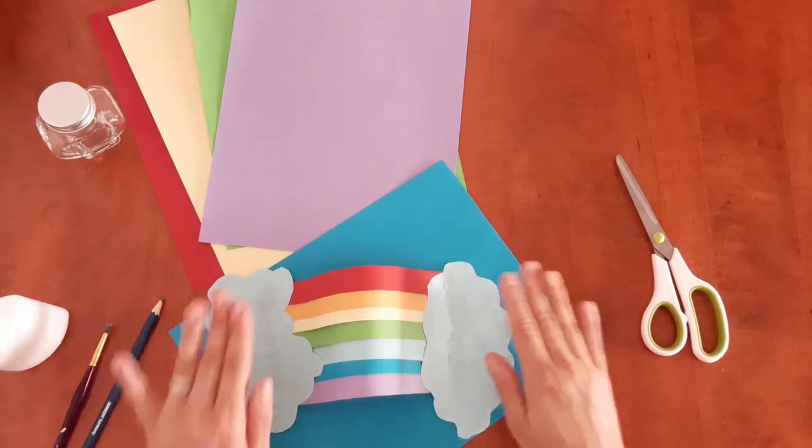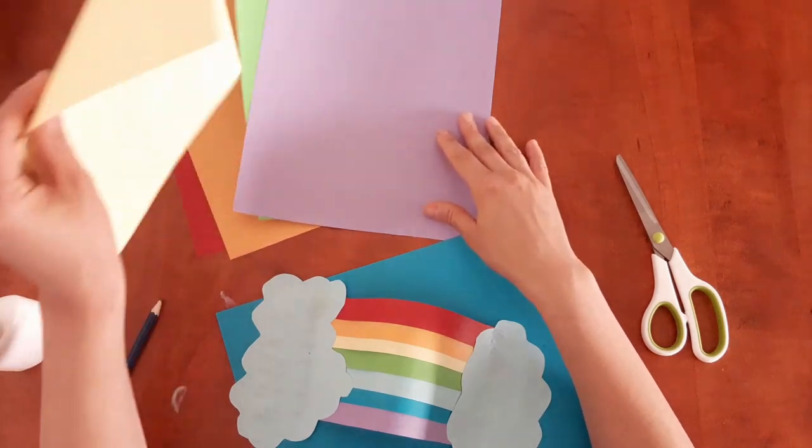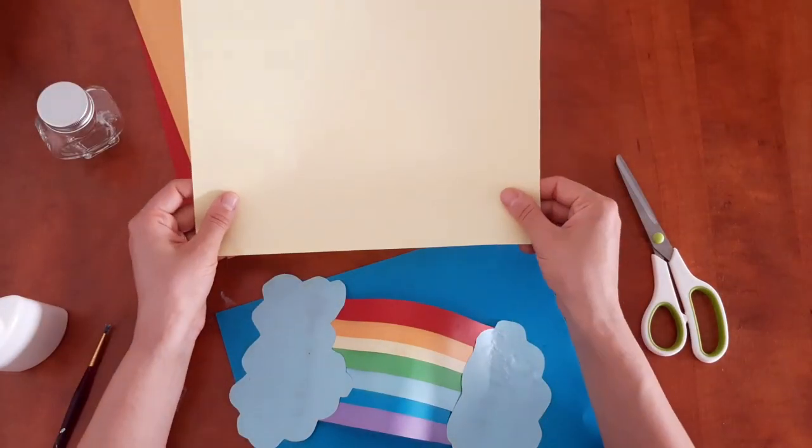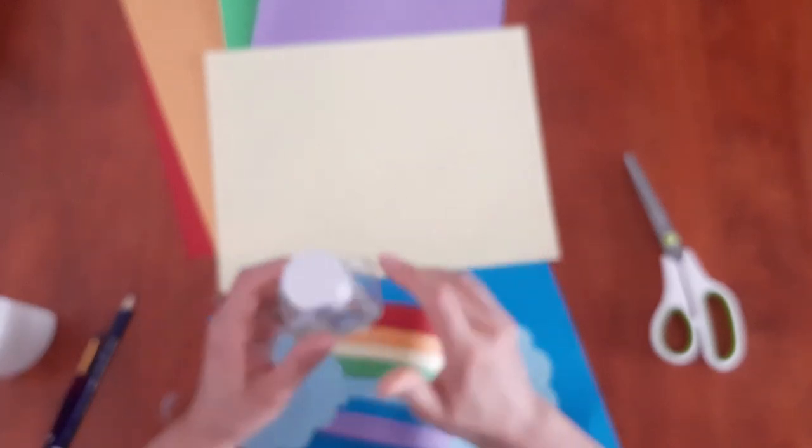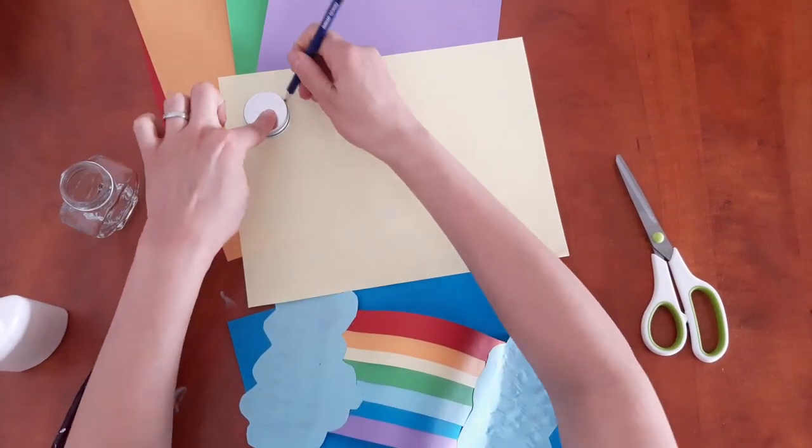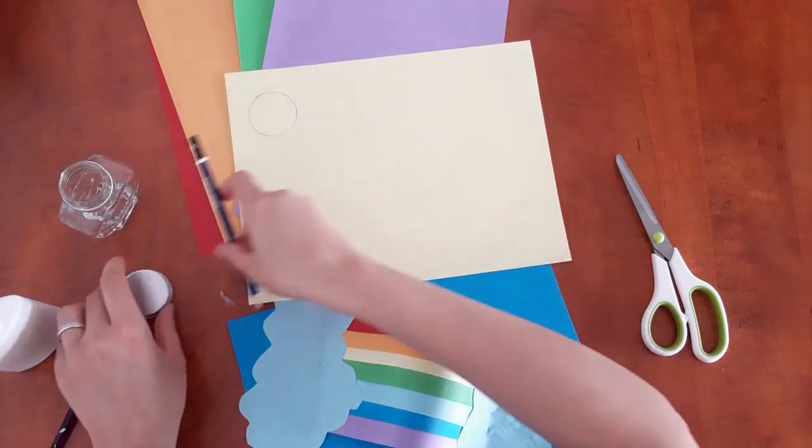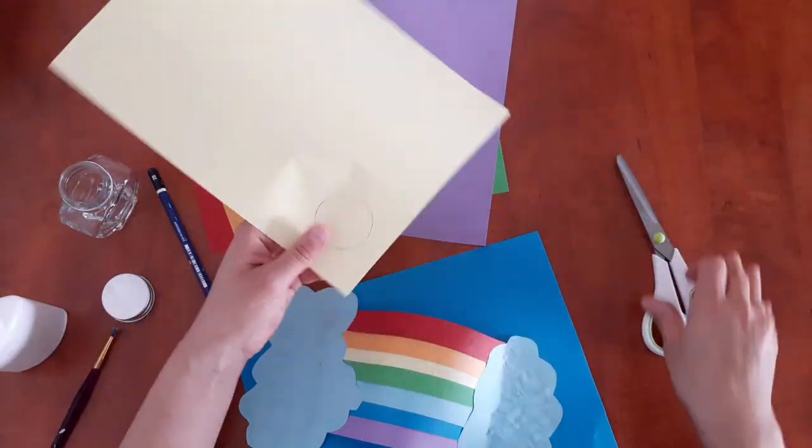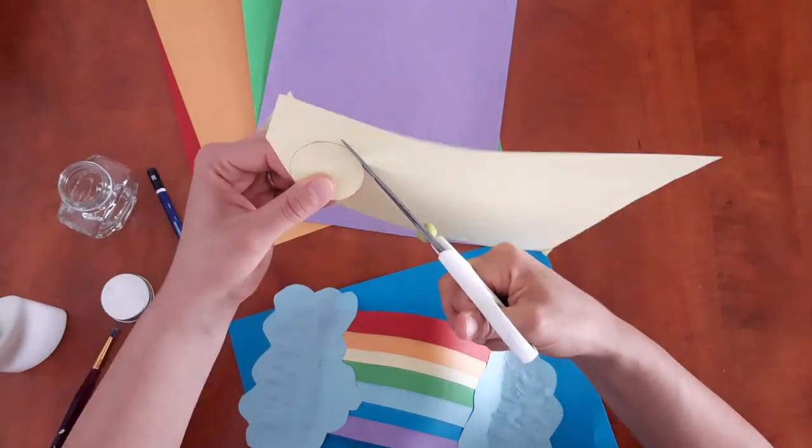You can also cut a sun. You will need a yellow page. You need to draw a circle. I will use the lid of a jar to create my circle. Take a pencil, draw your circle, then cut it. And we are going to need some sun rays.